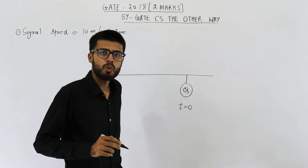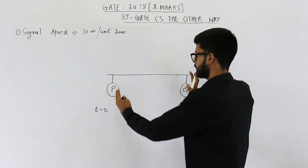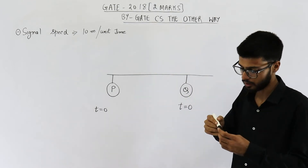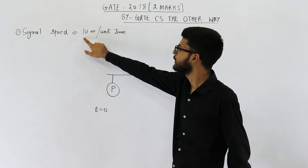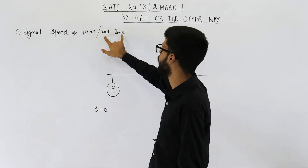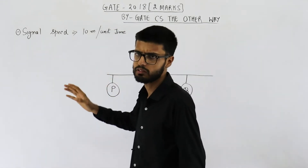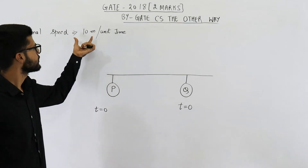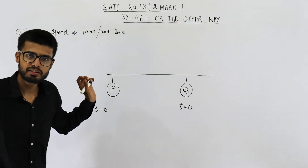They are asking: what is the maximum distance between P and Q such that a collision will not occur? The signal speed is given as 10 meters per time unit. They haven't specified what the time unit is — it could be a second or anything — but in one time unit, the signal travels 10 meters. This question is really simple.